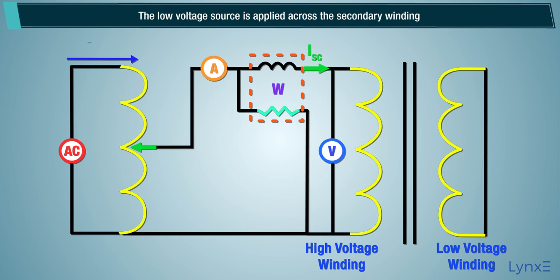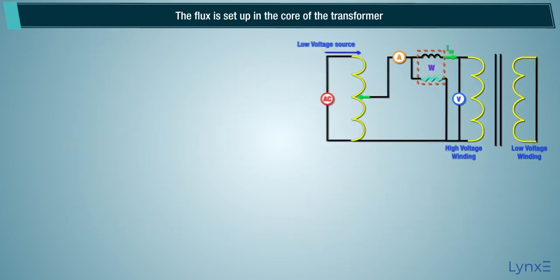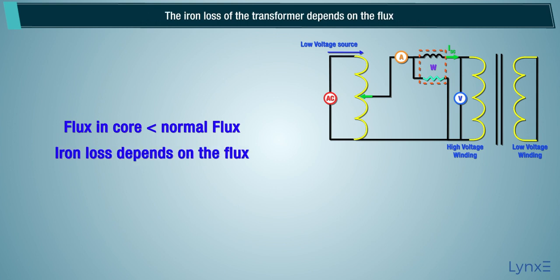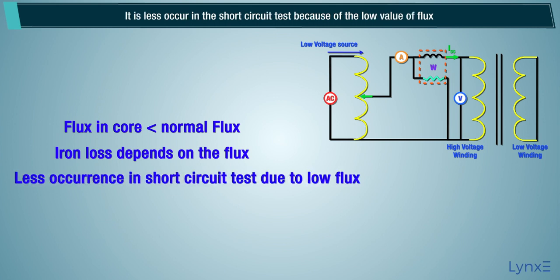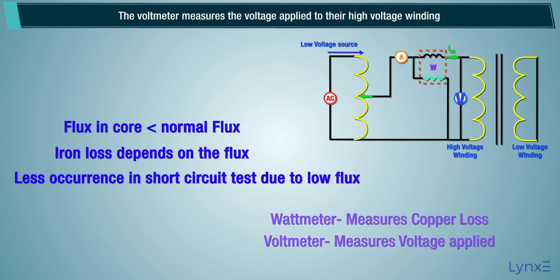The low voltage source is applied across the secondary winding, which is approximately 5 to 10% of the normal rated voltage. The flux is set up in the core of the transformer. The magnitude of the flux is small as compared to the normal flux. The iron loss of the transformer depends on the flux; it is less in the short circuit test because of the low value of flux. The reading of the wattmeter only determines the copper loss occurring in the windings. The voltmeter measures the voltage applied to the high voltage winding.